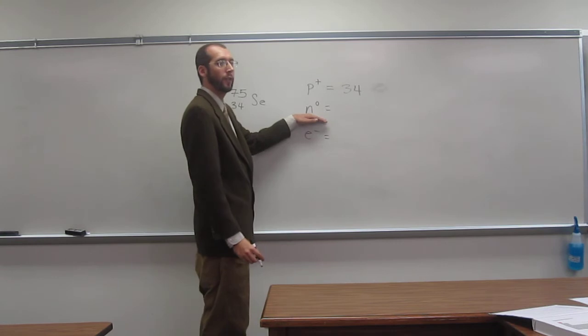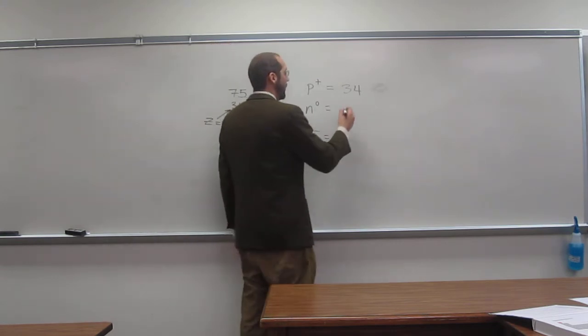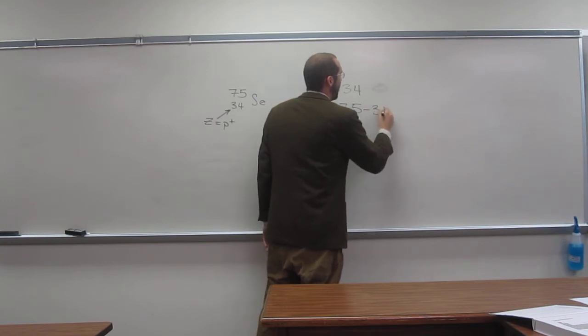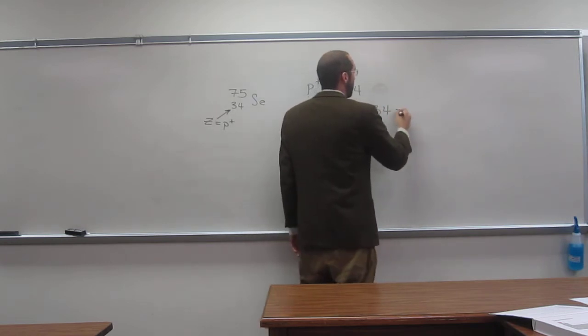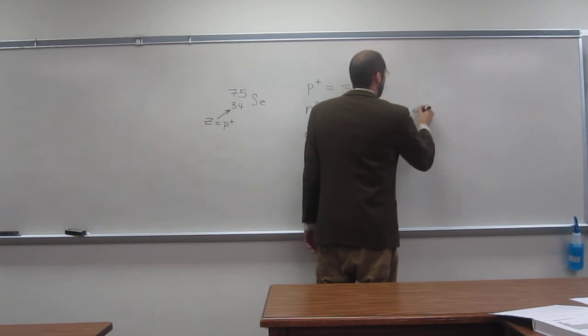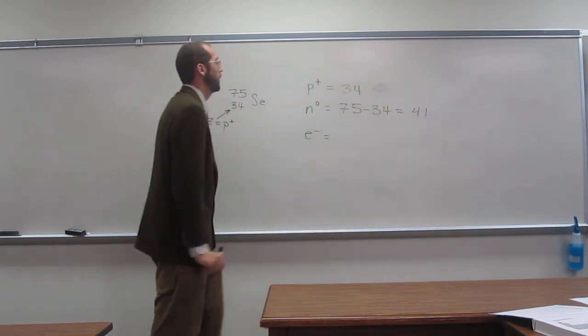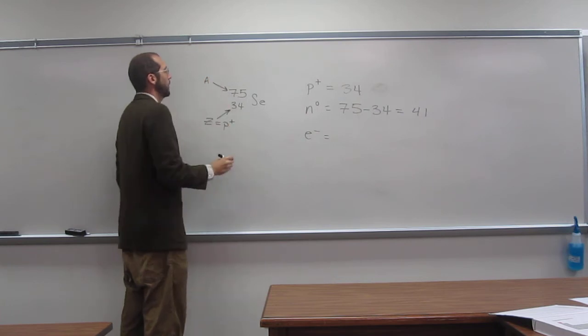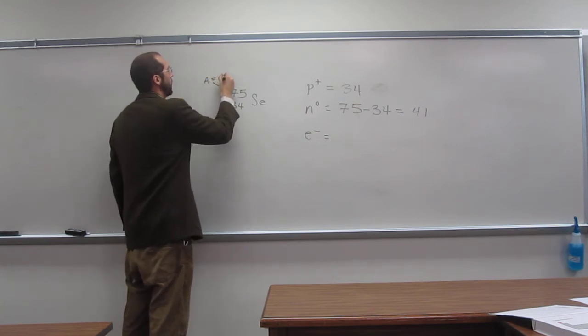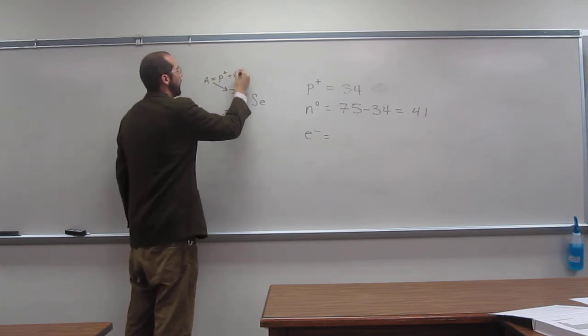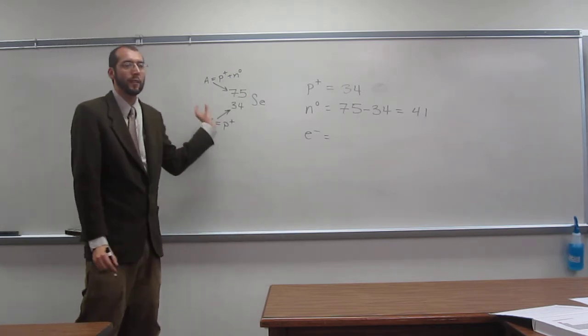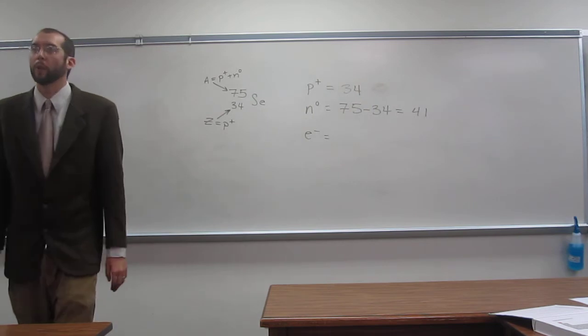So number of neutrons, how would we figure it out? Yeah, seventy-five minus thirty-four, and that equals forty-one. So the mass number equals the number of protons plus the number of neutrons, right? So in order to figure out the number of neutrons, you take the mass number and subtract the number of protons, okay?